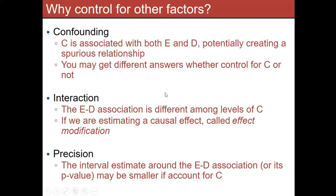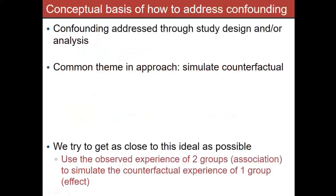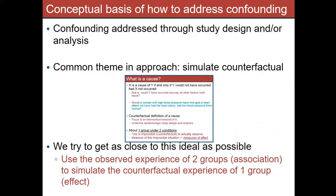We need to deal with confounding — these external variables — through our study designs and our analyses. The way we fix confounding, the way we get rid of the fact that you have other variables related to both exposure and disease, is through a number of techniques. The idea, again, for all of this is that we're essentially simulating the counterfactual in our analyses — we're really hard trying to balance the sample and fix things so the confounder is unrelated to the exposure or disease.